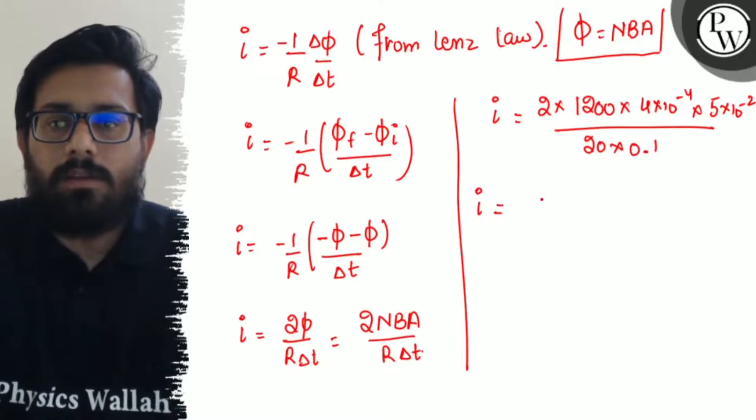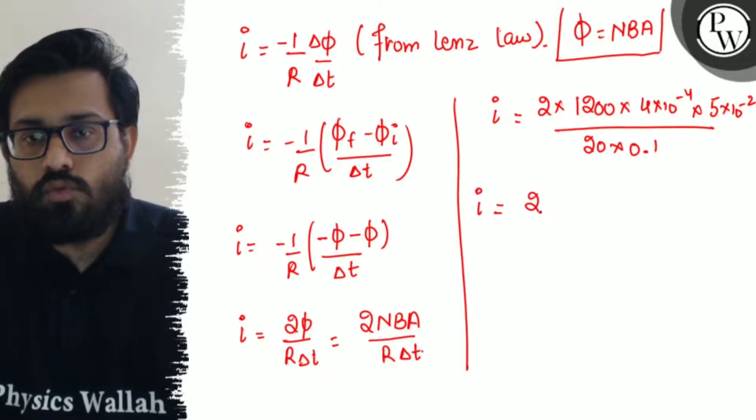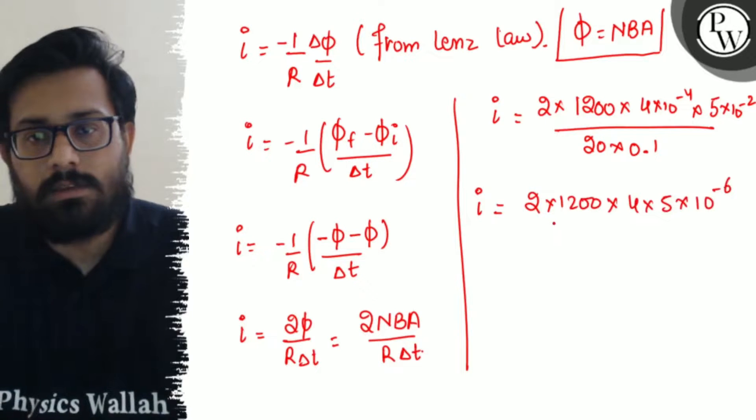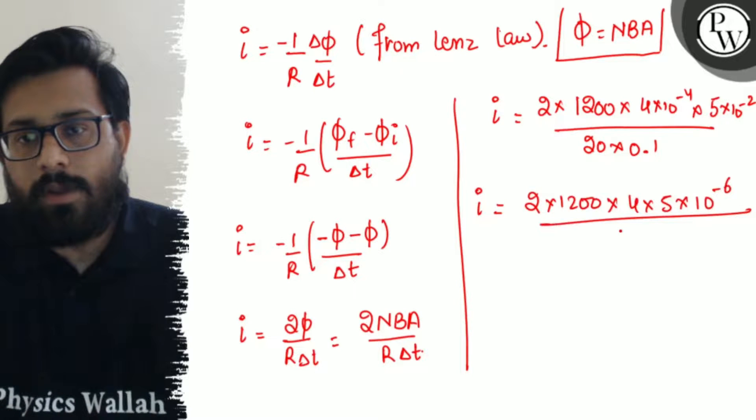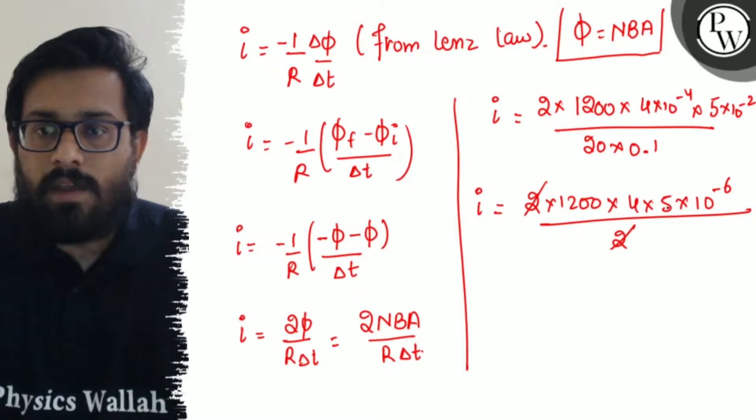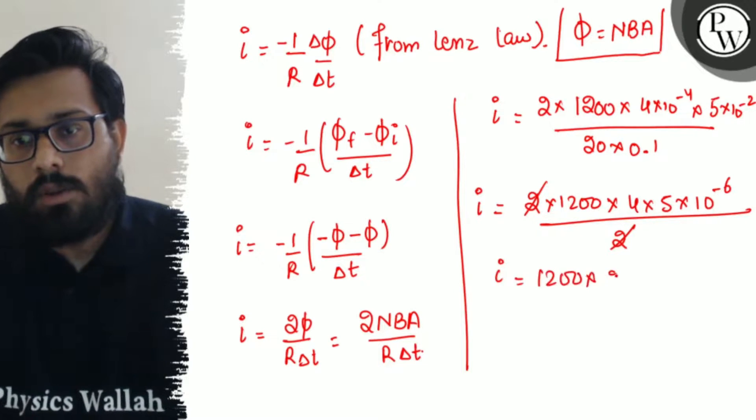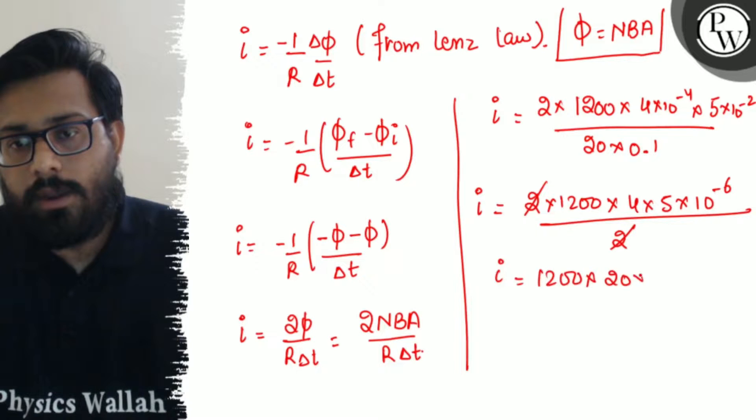So i comes out to be 2 × 1200 × 4 × 5 × 10⁻⁶ divided by 2. 2 cancels out, 5×4=20, and i becomes 1200 × 20 × 10⁻⁶.